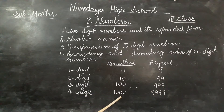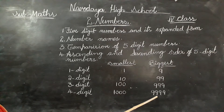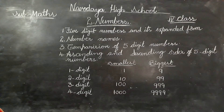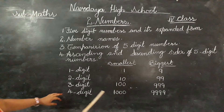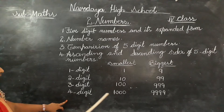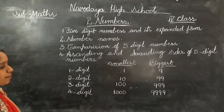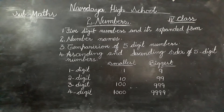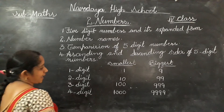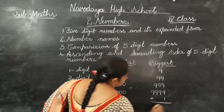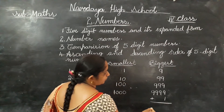The four digit smallest number is one thousand. The biggest four digit number is nine thousand nine hundred and ninety-nine. What is happening here? The next five digit number comes. If we add one to the biggest four digit number, what number will we get?